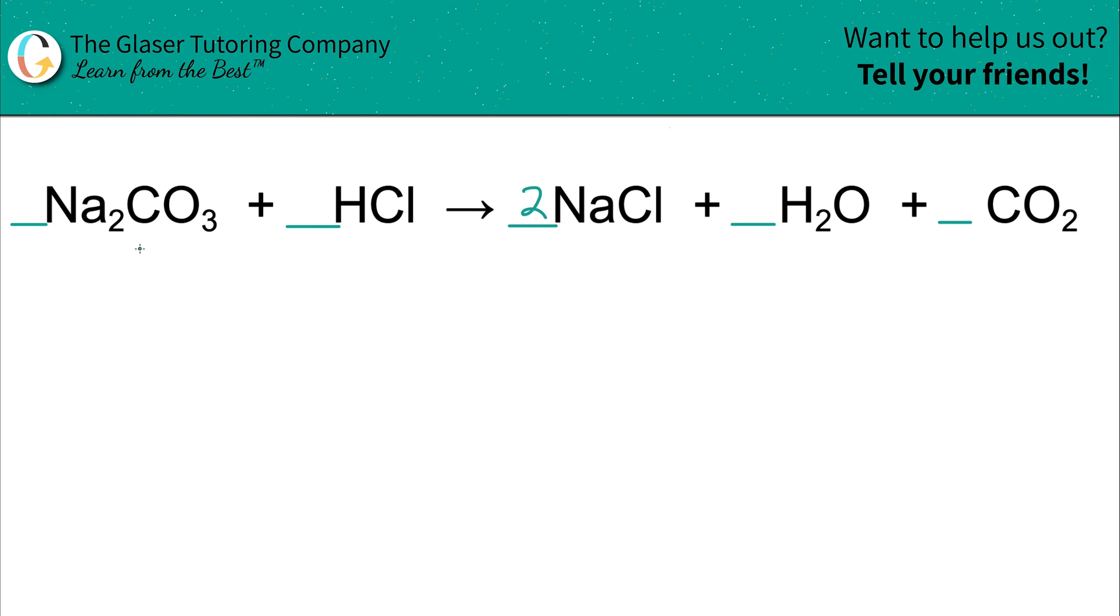How about next? Next thing I see is I actually see the polyatomic ion carbonate. Now, I don't want to break up polyatomic ions if I can avoid it. So I'm looking, I have carbonate here on the left. I'm looking for carbonate on the right, CO3. I don't have it. No big deal. That means I do have to break it up.